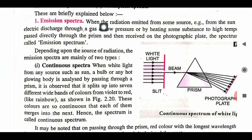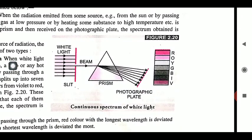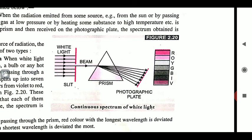Emission spectra are further divided into two categories: one is continuous spectra and the second one is line spectra. In continuous spectra, the seven colors are adjacent to each other — where violet ends, indigo begins; where blue ends, green begins. There is no gap between these colors. They are placed at completely adjacent positions with no specific gap between them. This type of spectra is known as continuous emission spectra.